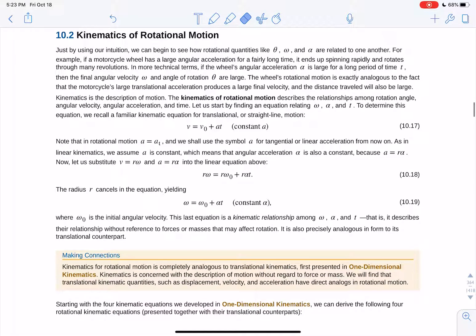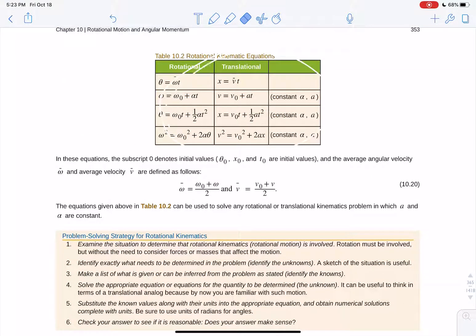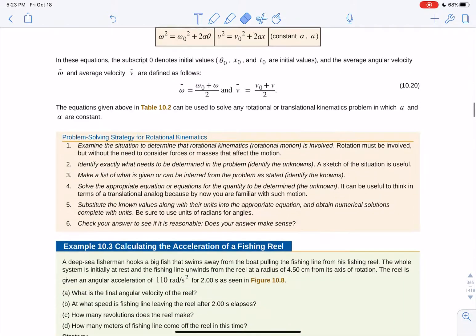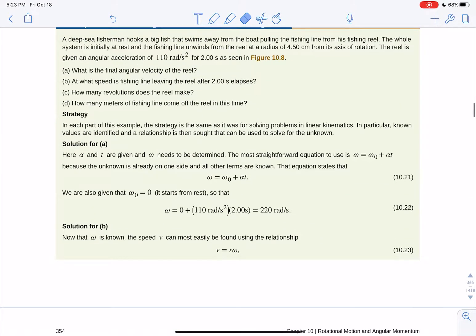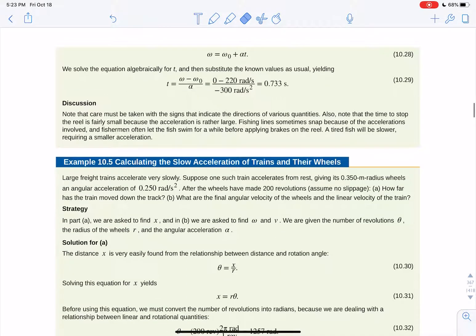So the kinematics - you have the same equations. V equals v0 plus at. Except now it becomes omega equals omega 0 plus alpha t. So there's your rotational and translational equations. The relationships between them. They're the same kinematics equations you know and love. And in rotational form, you just replace all your Latin characters with Greek letters.